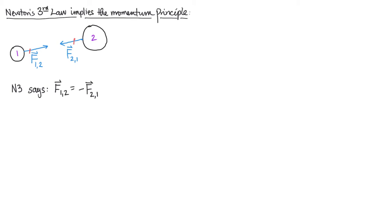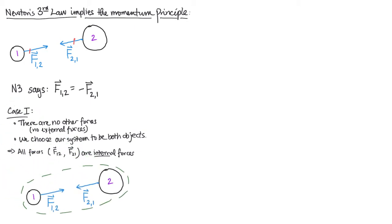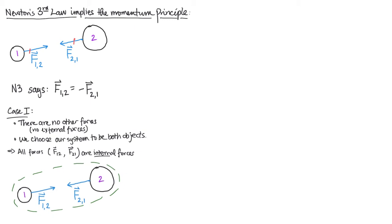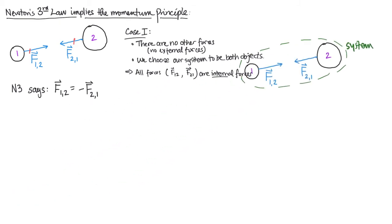What I'd like to do today is talk about how this statement of Newton's third law is related to something you might think of as different or independent — namely, the momentum principle and conservation of momentum. Let's illustrate it through a few cases. For our first case, we consider two objects with no other forces present, just those two blue vector forces F1,2 and F2,1. We choose our system to be both of the objects, and I'll draw a circle around the objects of interest and call that my system.